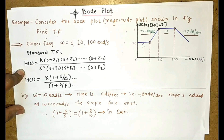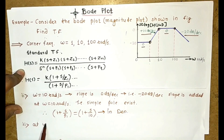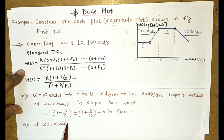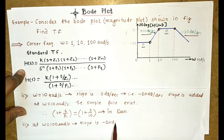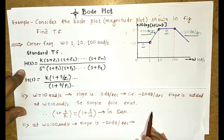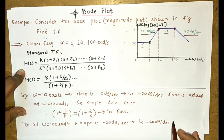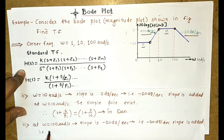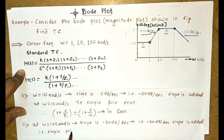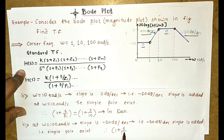Now for the third corner frequency, omega equals 100 radian per second. The slope is changing from zero dB to minus 20 dB, so minus 20 dB slope is added. Therefore, one more simple pole is present at omega equals 100 radian per second. The simplified form is (1 + s/100), which is placed in the denominator.